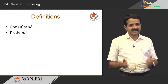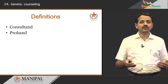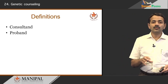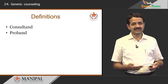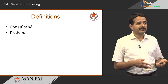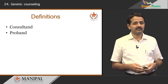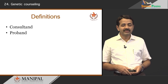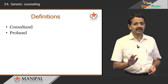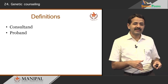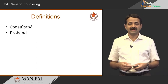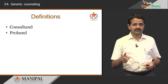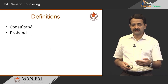Before I discuss genetic counselling in particular, I would like to define two words. One is 'consultand' — note the spelling, it is not 'consultant'. A consultand is a person who seeks genetic counselling from a geneticist or genetic counsellor in the clinic for a particular condition in the family, or for a condition for which he or she is at risk of developing. 'Proband' is the affected member in the family who brings the family to medical attention — the first affected member. A proband can be a consultand as well, seeking counselling for their own condition, but a consultand may or may not be affected with the genetic disorder.